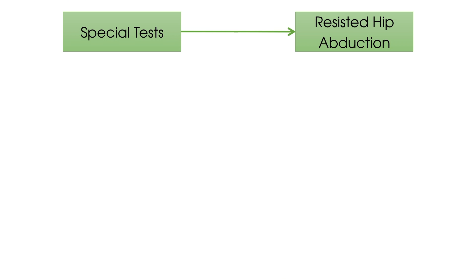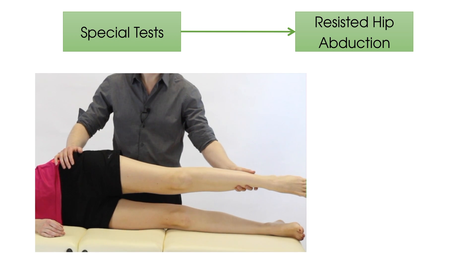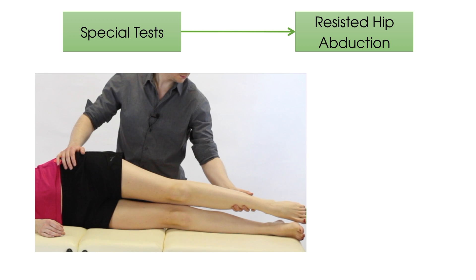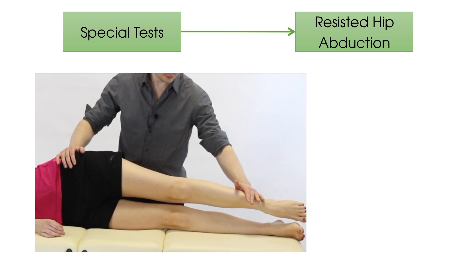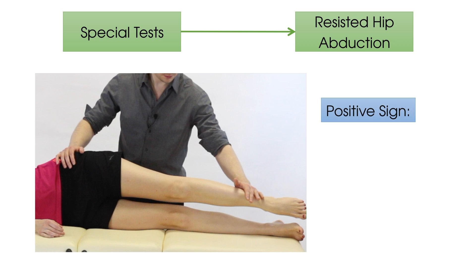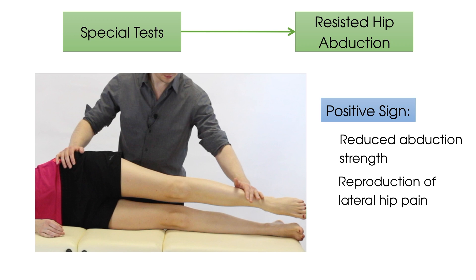Next is to bring the affected hip into an adducted position and test isometric resisted hip abduction from there. This test makes sense because, as we said before, excessive hip adduction affects the gluteus medius and minimus tendons. Both reduced abduction strength and/or the reproduction of lateral hip pain can tell you your patient has a gluteal tendinopathy.